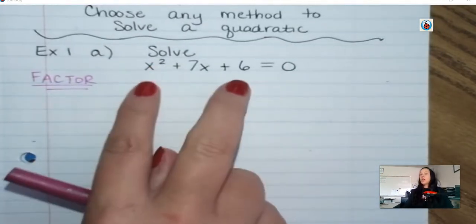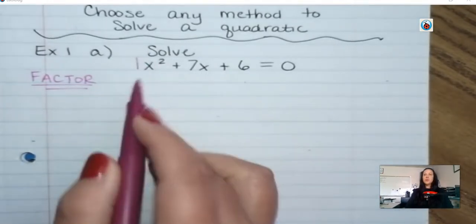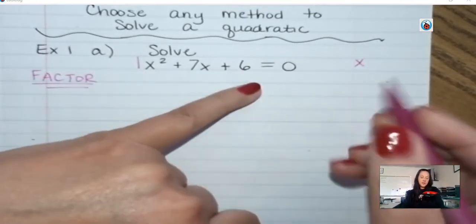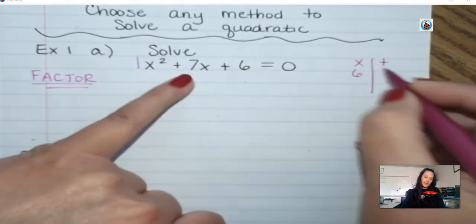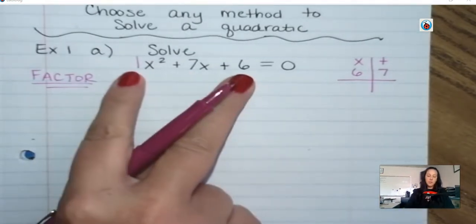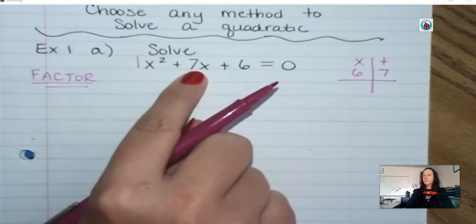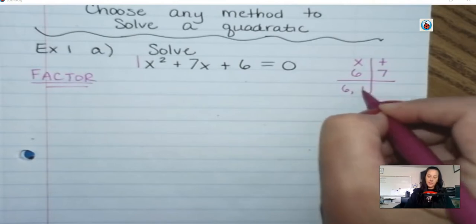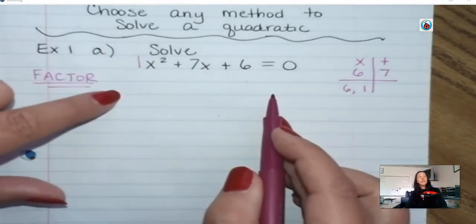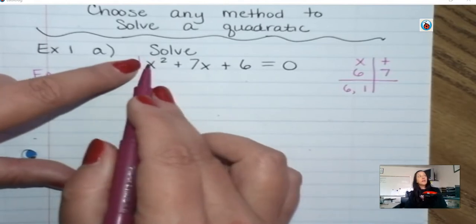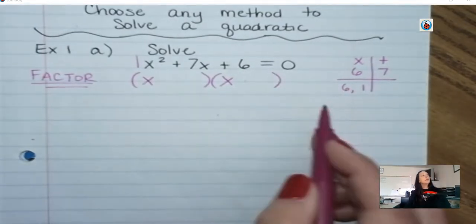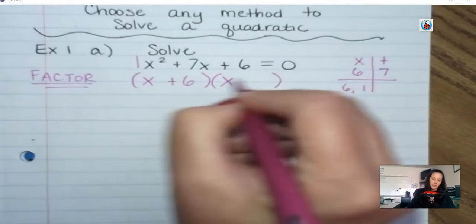This is just a review from the last chapter. When we factor and there's a 1 in front — so when there's no number there, there's really a 1 — this is where you figure out what multiplies together to be your c value but what adds to be the b value. What multiplies to be 6 but adds to be 7. Hopefully real fast you think of that as 6 and 1. When there's a 1 in front, you just split up your x and put in a positive 6 and a positive 1.